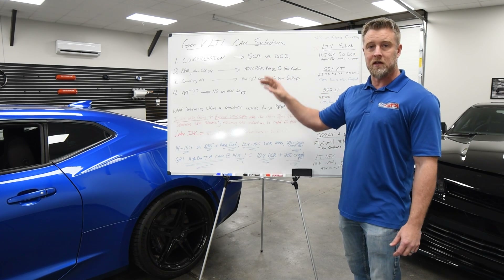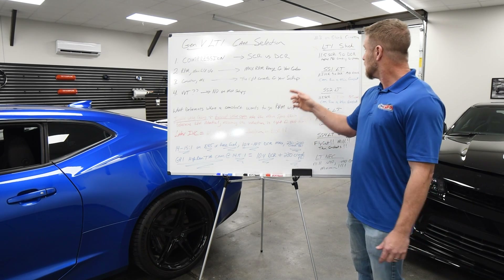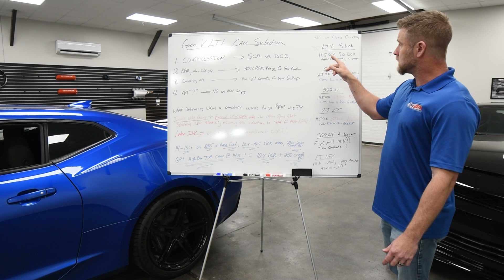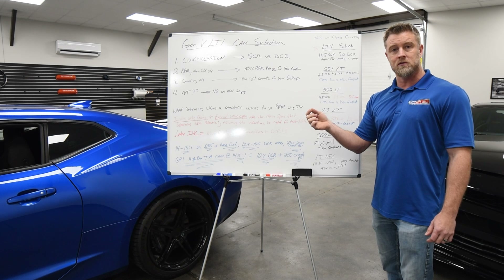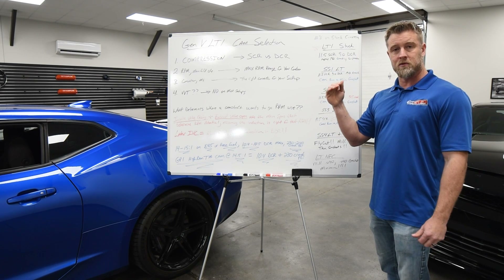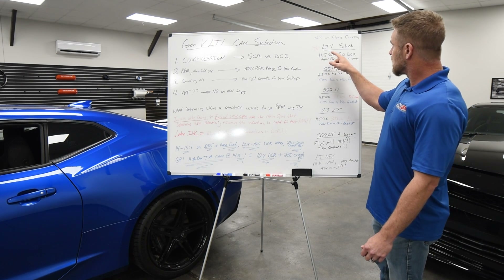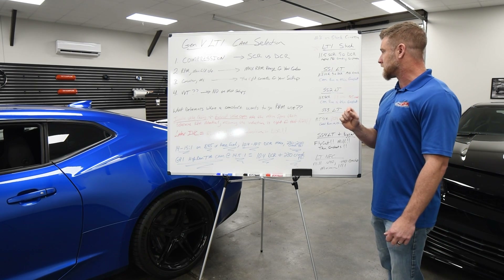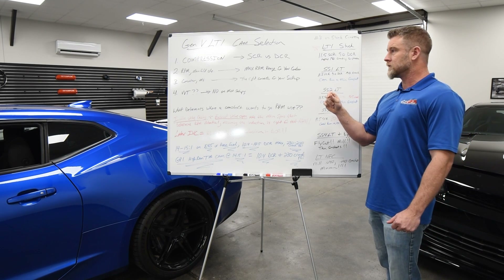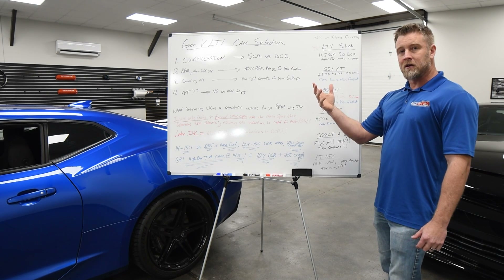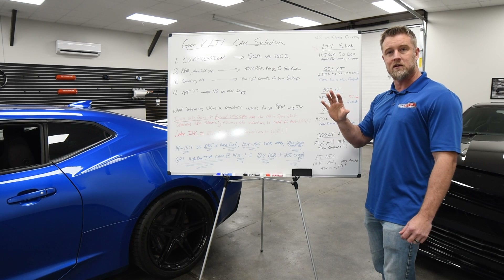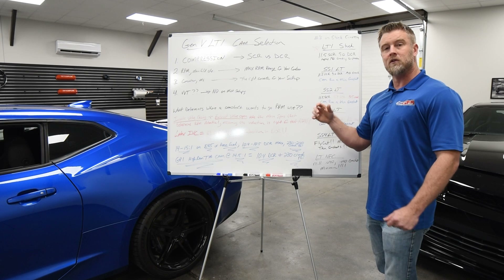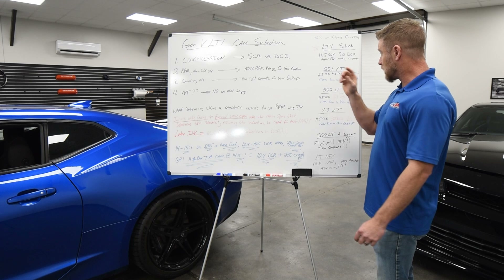One of the best benefits of the Gen5 LT engine — one of the contributing factors of why it makes such great power stock — is that it runs 11.5:1 static with about 9:1 dynamic compression. As we talked about in a previous video, dynamic compression takes into account when the intake valve closes: the later it closes, the lower that number; the earlier it closes, the higher. That works out to about 190 PSI cranking compression. There's a good calculator on Wallace Racing that will help you figure out dynamic compression and approximate cranking pressure.